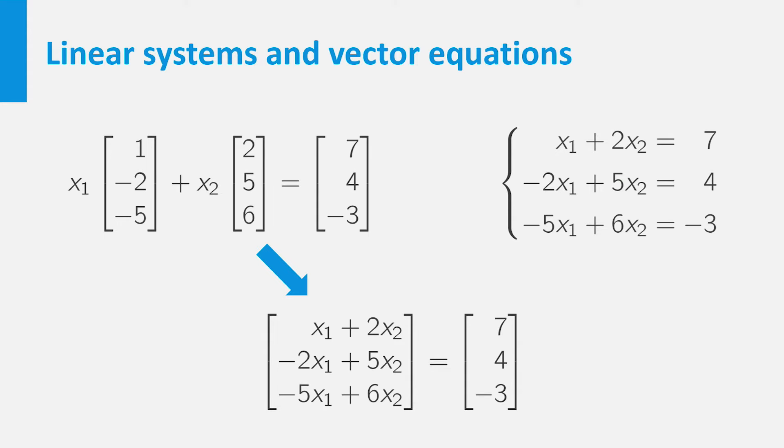For this to be true, all entries of the vectors should be equal. This results in precisely the three equations of the linear system on the right.